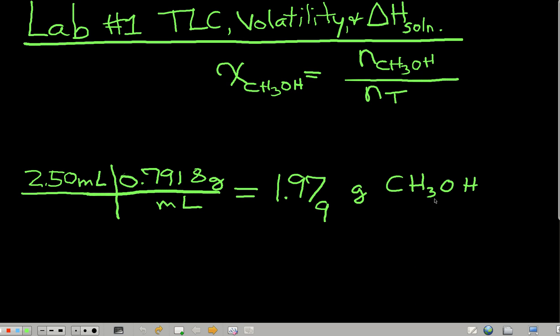So first of all, to get the moles of methanol, you measured out 2.50 milliliters of methanol in your 25% solution. I'm going to walk you through the calculations for the 25% solution, and you can figure out the other ones.